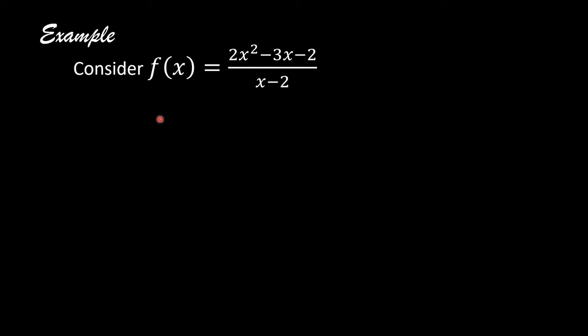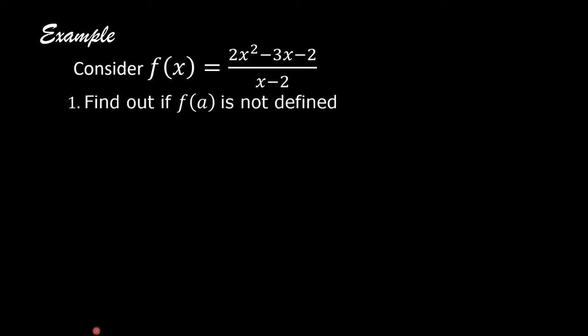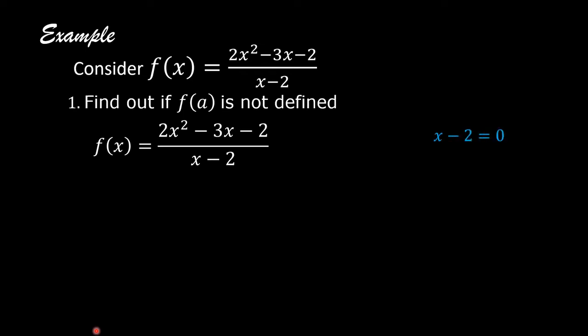Example: Consider f of x equals 2x squared minus 3x minus 2, divided by x minus 2. Step 1: Find out if f of a is not defined. Equate x minus 2 to 0 and solve for x. x equals 2, so 2 equals a.